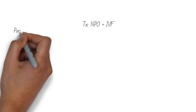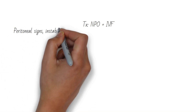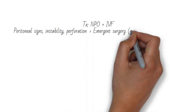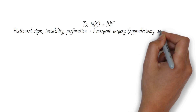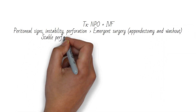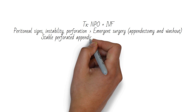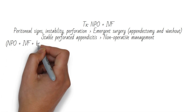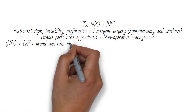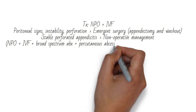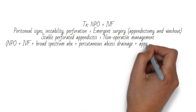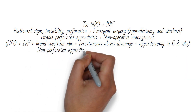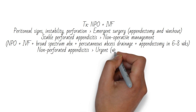To treat, make the patient NPO and give IV fluids. If they have peritoneal signs and hemodynamic instability, or if they have soiled themselves inside their abdomen, go to the OR emergently for appendectomy and washout. Stable perforated appendicitis should normally undergo non-operative management: NPO, IV fluid resuscitation, and broad-spectrum antibiotics with particular attention to gram negatives and anaerobes. Drain any abscesses percutaneously and schedule for interval appendectomy once things have cooled down in about six to eight weeks.